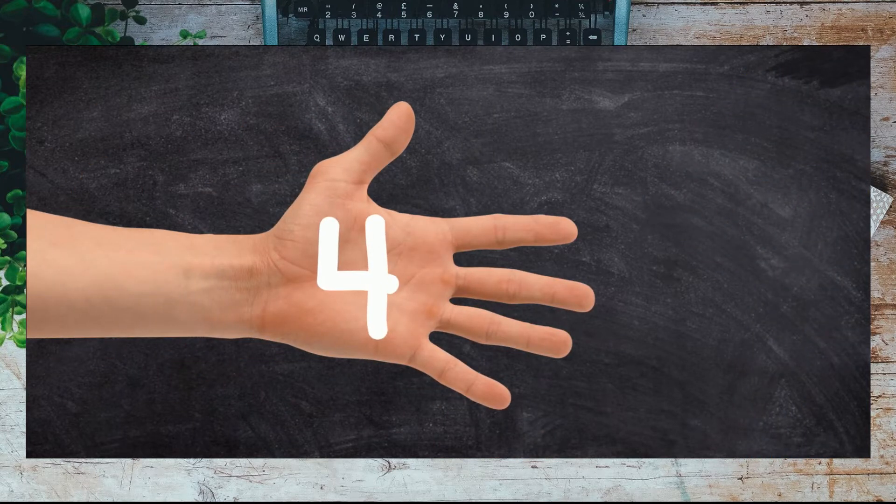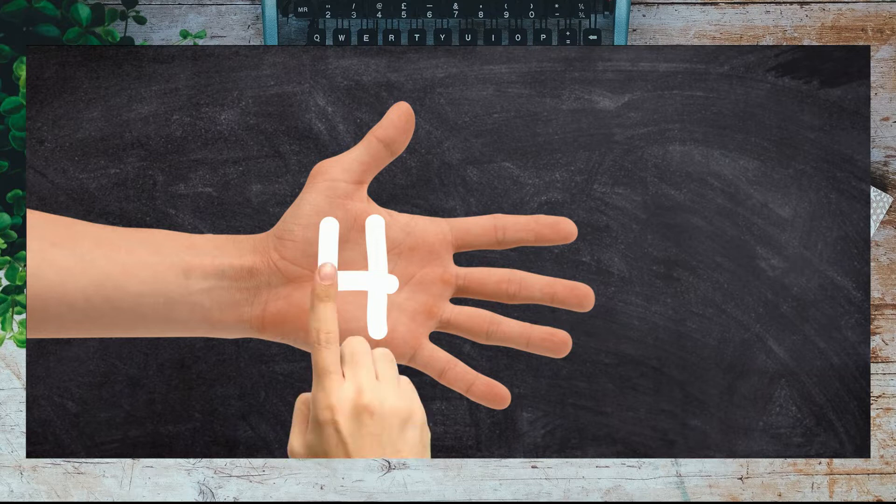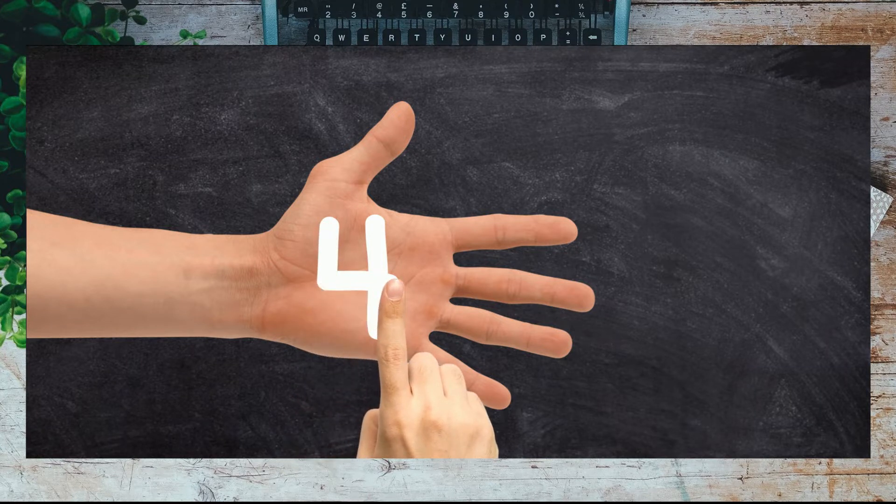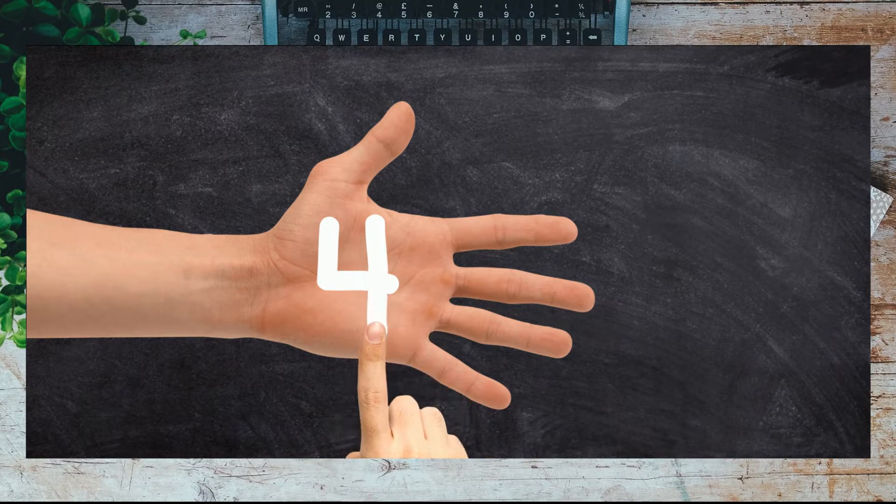Can you write the number four on your palm? Start at the top, draw a small line to the middle, small line across, start at the top again and a big line down.